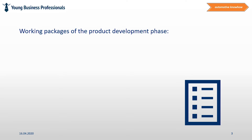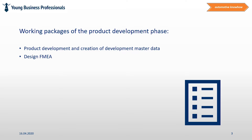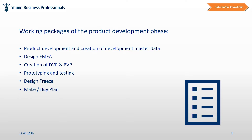The following working packages are part of the product design phase: product development and creation of development master data, design FMEA, creation of DVP and PVP, prototyping and testing, the design freeze, make or buy planning, and quality gate review phase 2. All these working packages are interacting with each other and results of one task are influencing the other. So several loops of improvements are performed during the whole phase.